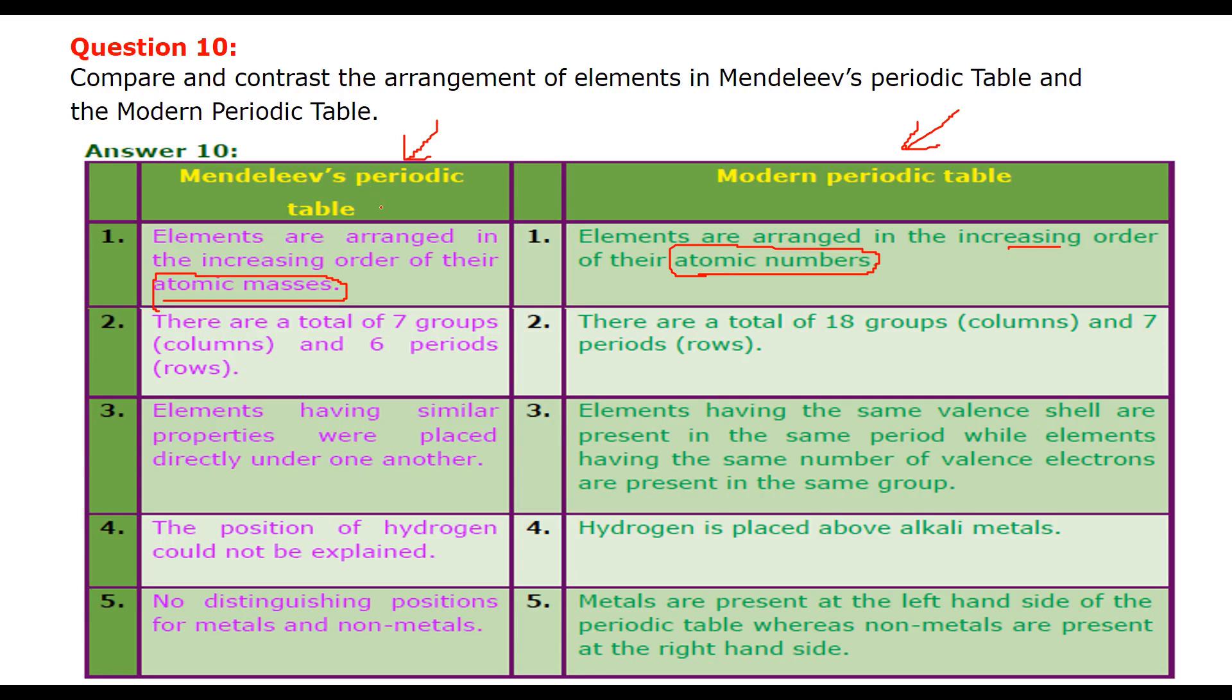Second is, there are 7 groups and 6 periods. Groups are nothing but columns and periods are nothing but rows. Here, in modern periodic table, we have 18 groups, that is, 18 columns and 7 periods, 7 rows. In Mendeleev's, elements having similar properties were placed directly under one another. But in this case, elements which are having same valence shell are present in the same period. That is, same period, same row. While elements having the same number of valence electrons, they are placed in the same group. That is, column.